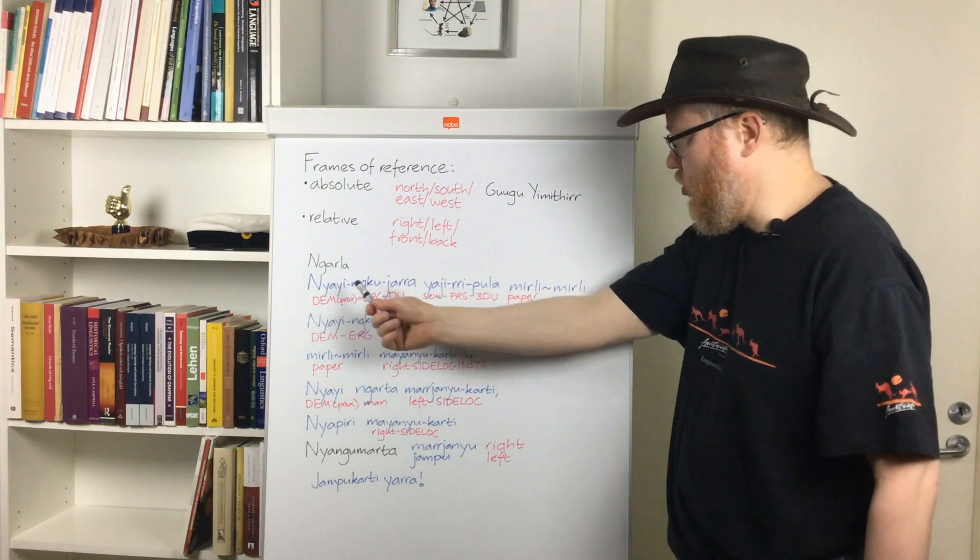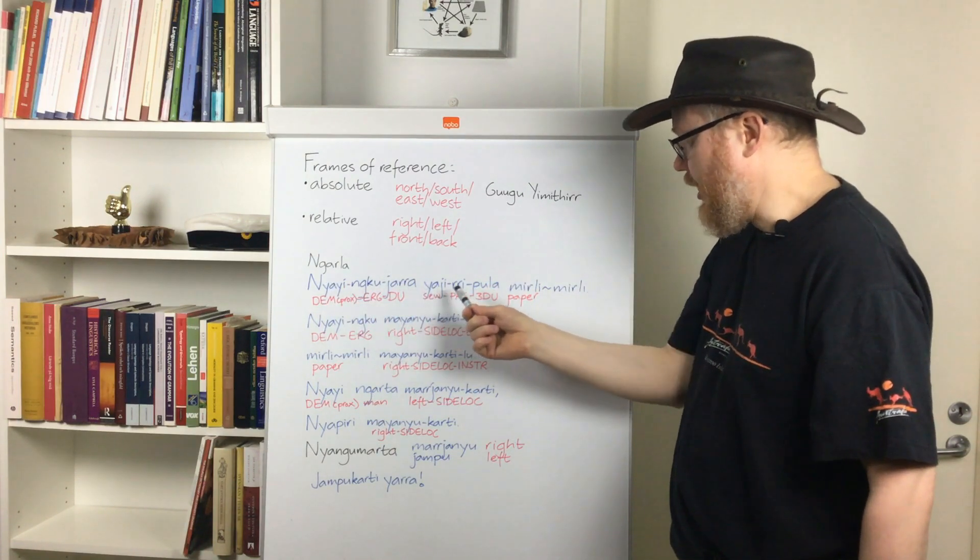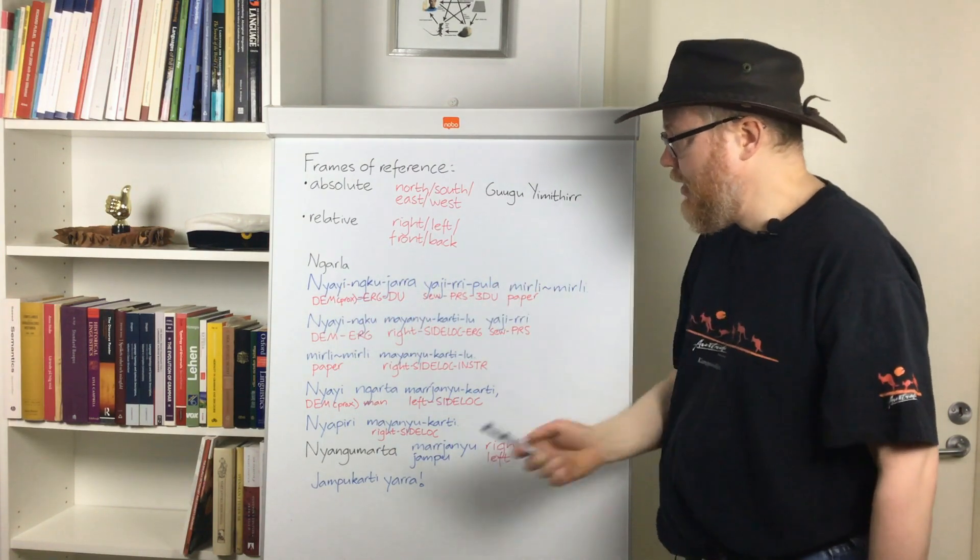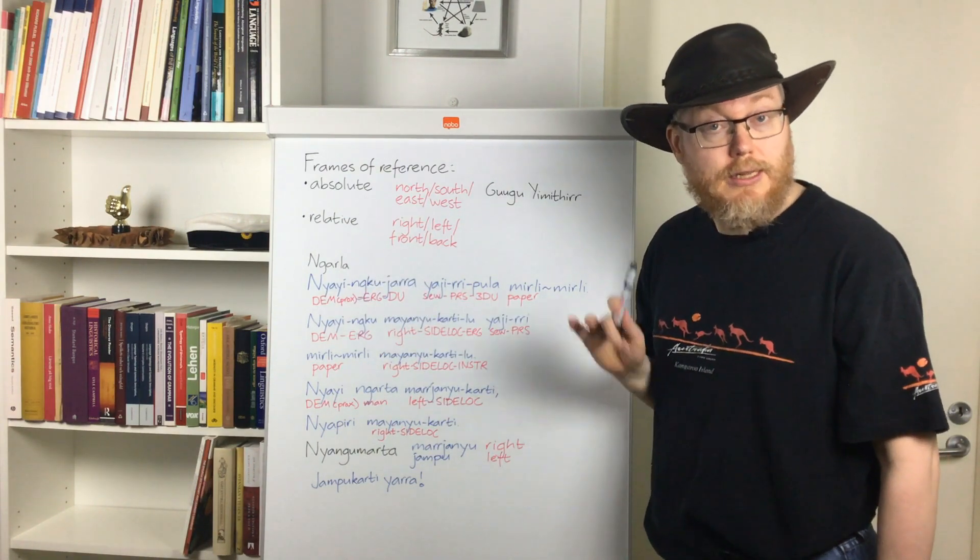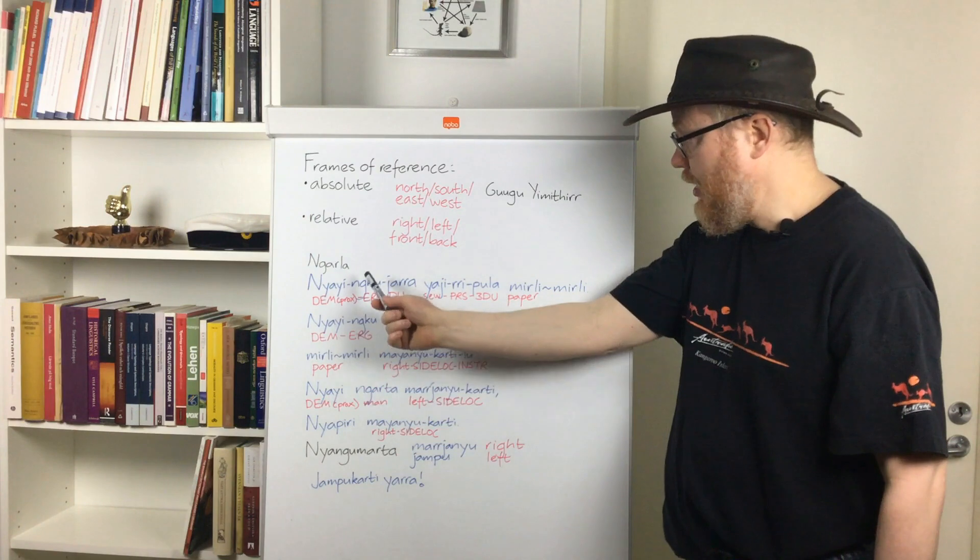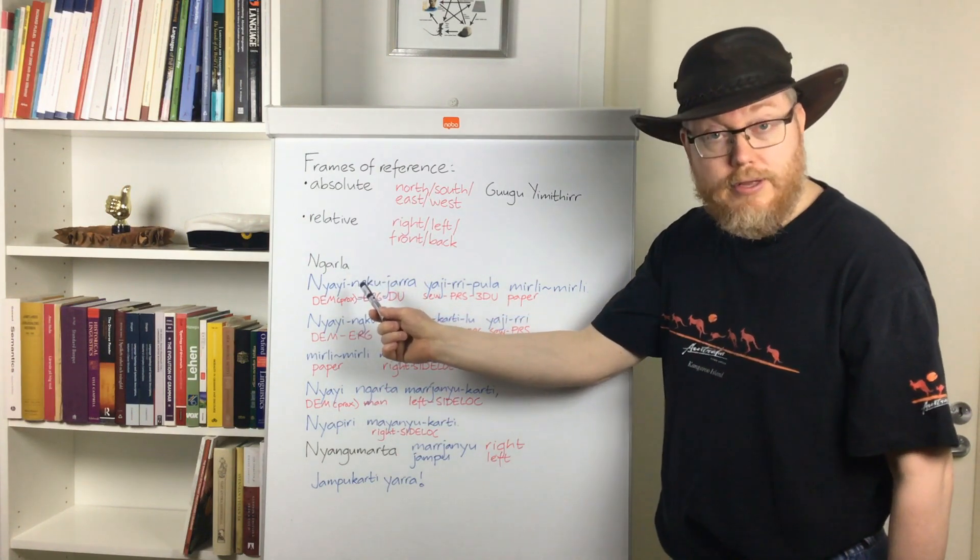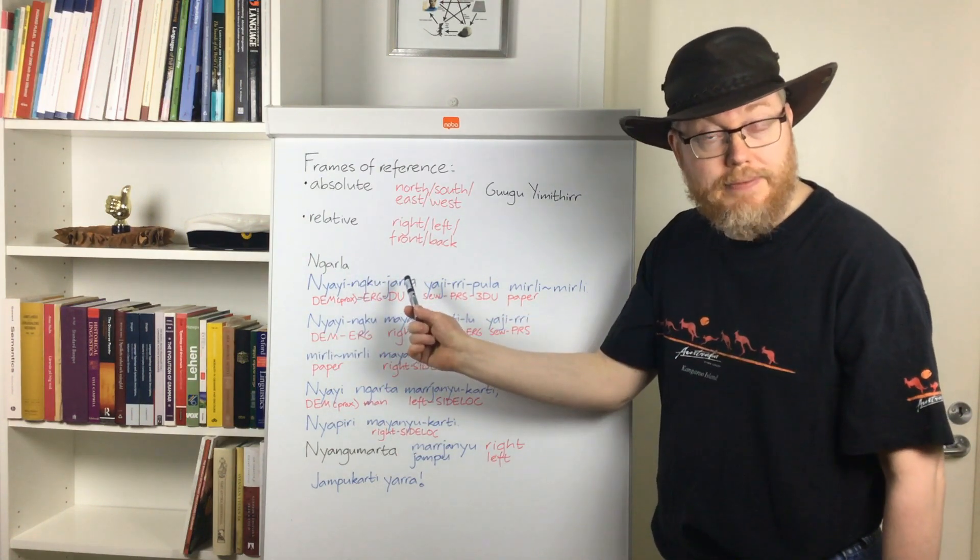So what do we have here? We have nyayi, the demonstrative for something that is close by, ngu, ergative, and jaara, dual.